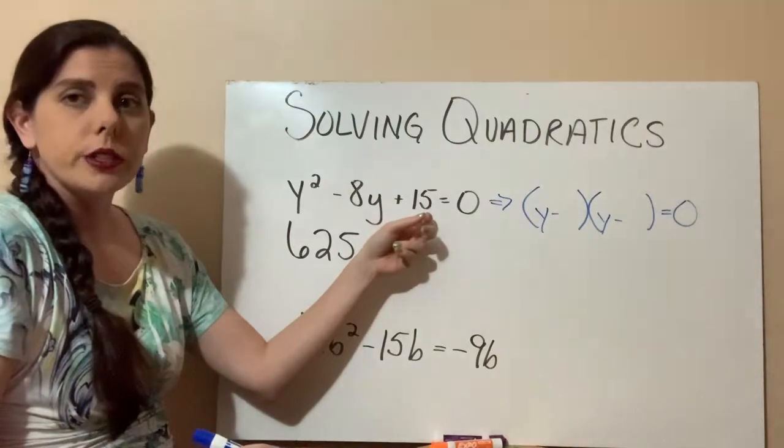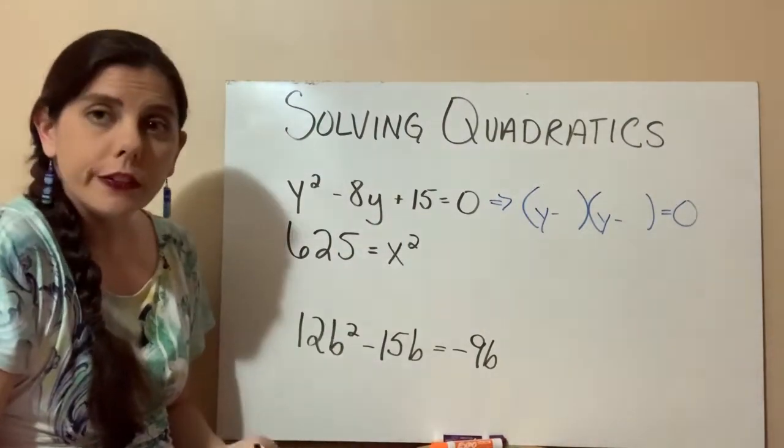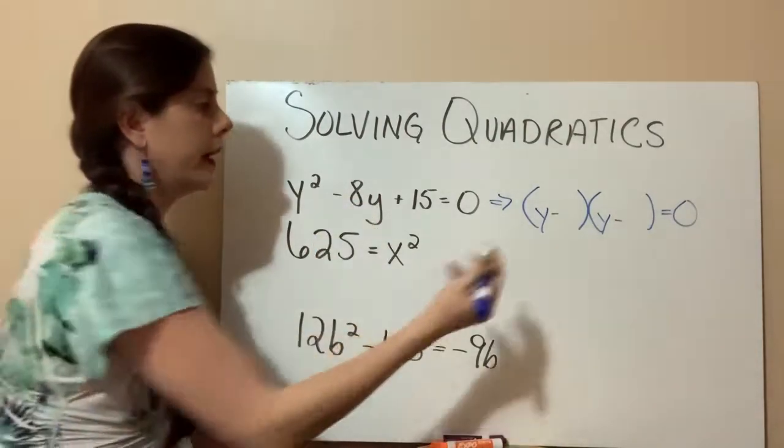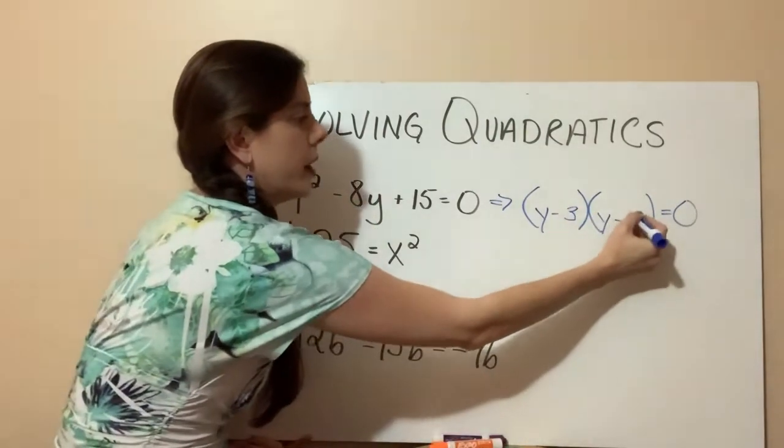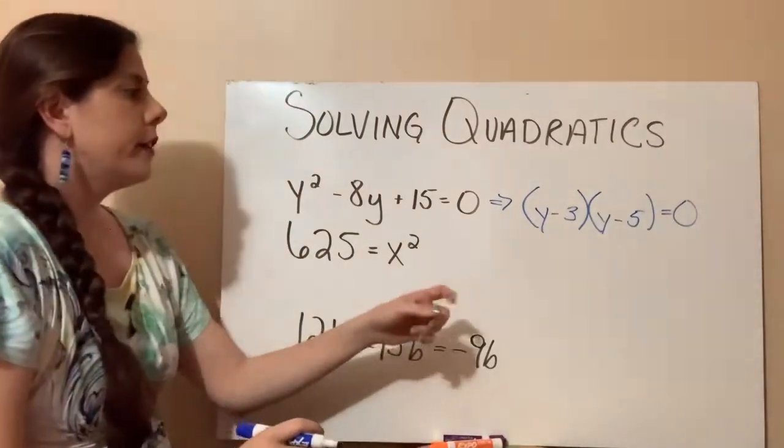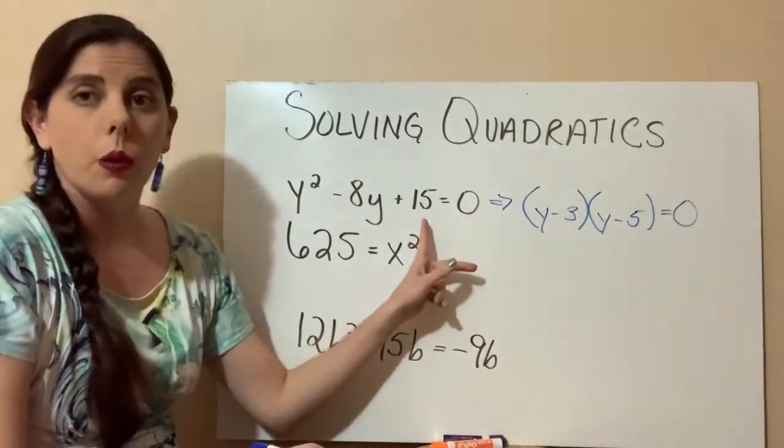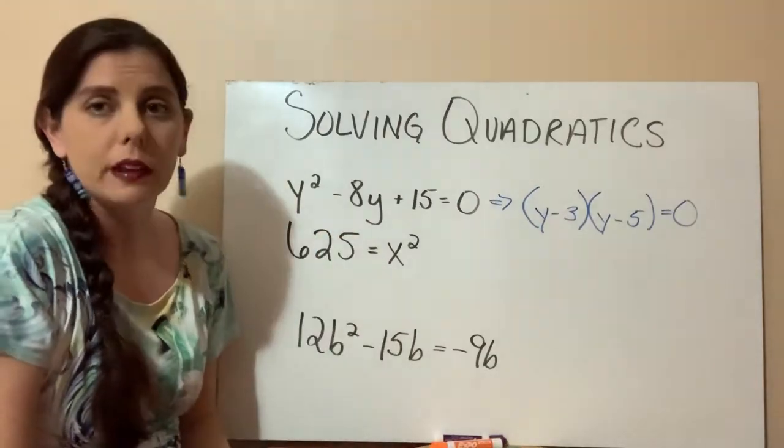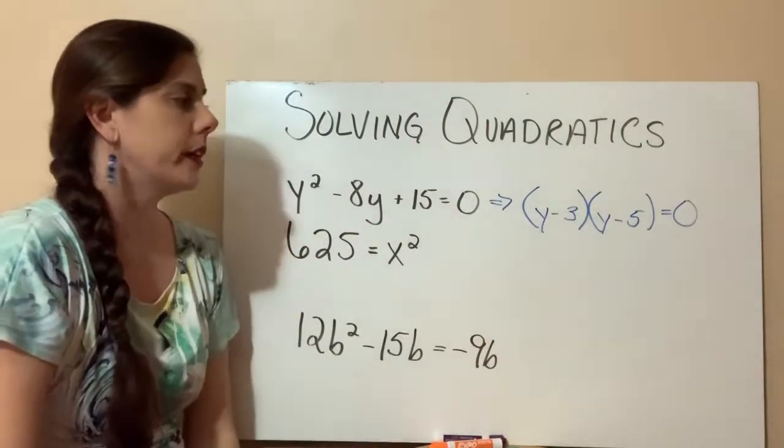And what are the factors of 15? 1 and 15 and 3 and 5. And we know that the 3 and the 5 would equal that negative 8. So a negative 3 and a negative 5. If you multiply them, they would equal a positive 15. And if you add them together, it would give you a negative 8. So we went ahead and factored this.